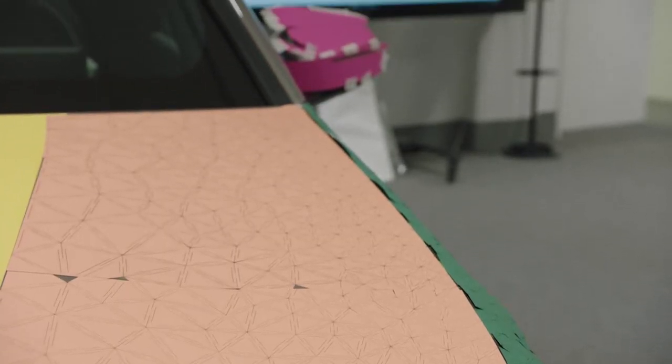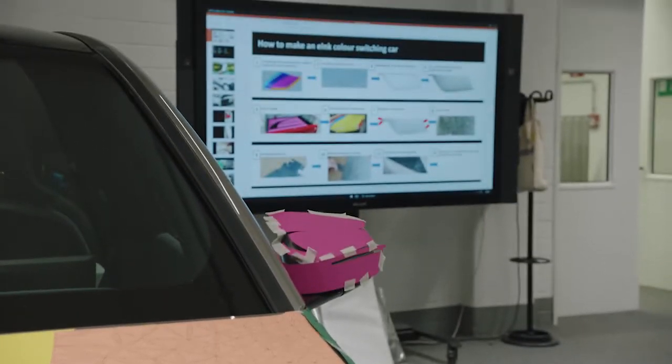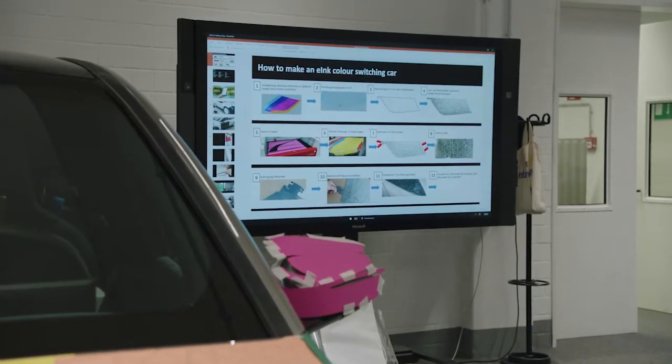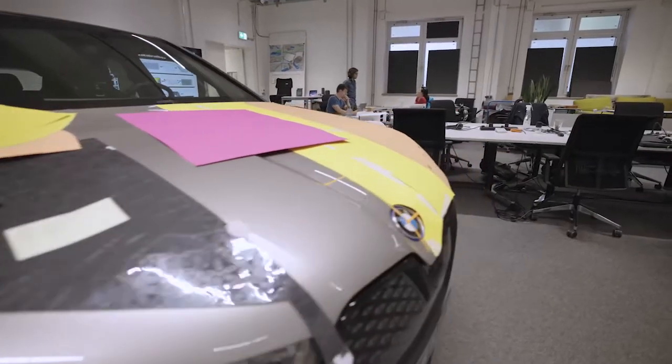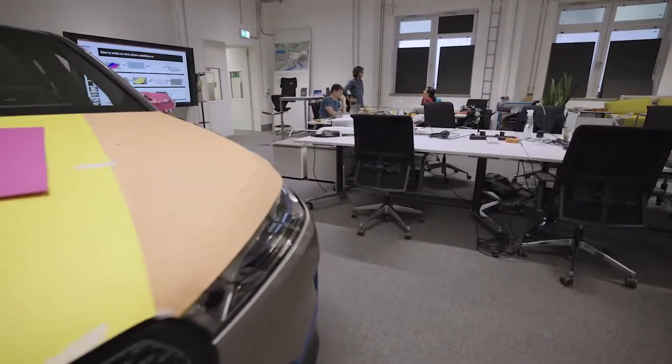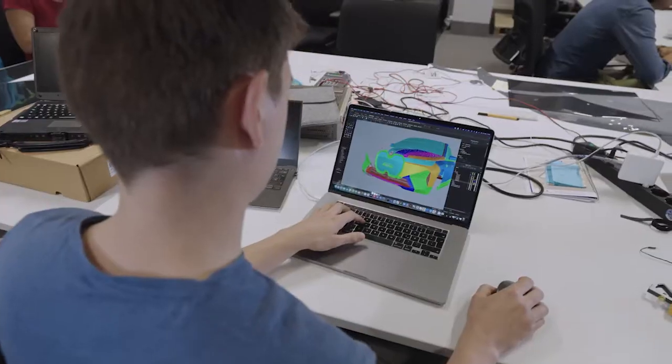The steps involved in making an E-ink car largely focus around getting something that's very 2D, like E-ink—it's like quite a stiff cardboard—to something that's very 3D, like our cars.